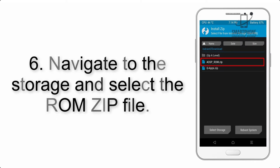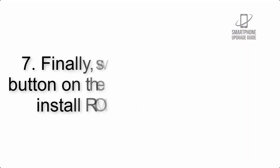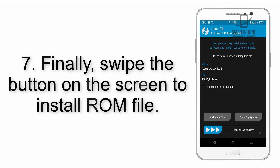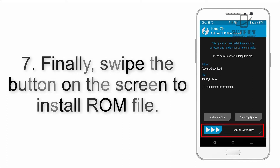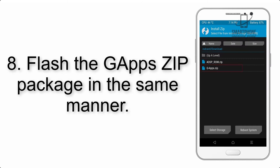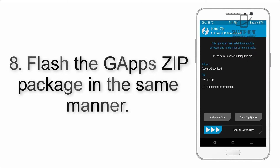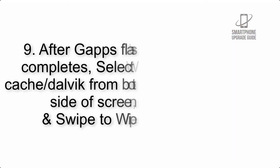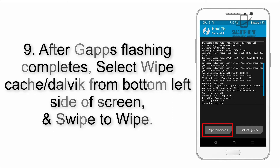Step 6: Navigate to the storage and select the ROM zip file. Step 7: Finally, swipe the button on the screen to install the ROM file. Step 8: Flash the GApps zip package in the same manner.